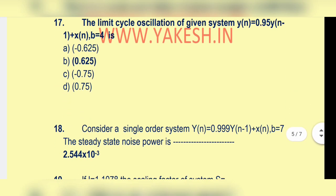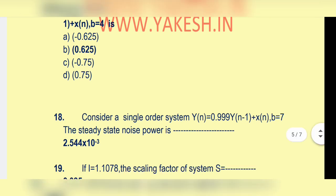The limit cycle oscillation of a given system y(n) = 0.95·y(n−1) + x(n), with b equal to 4 — option b is the answer: 0.625.